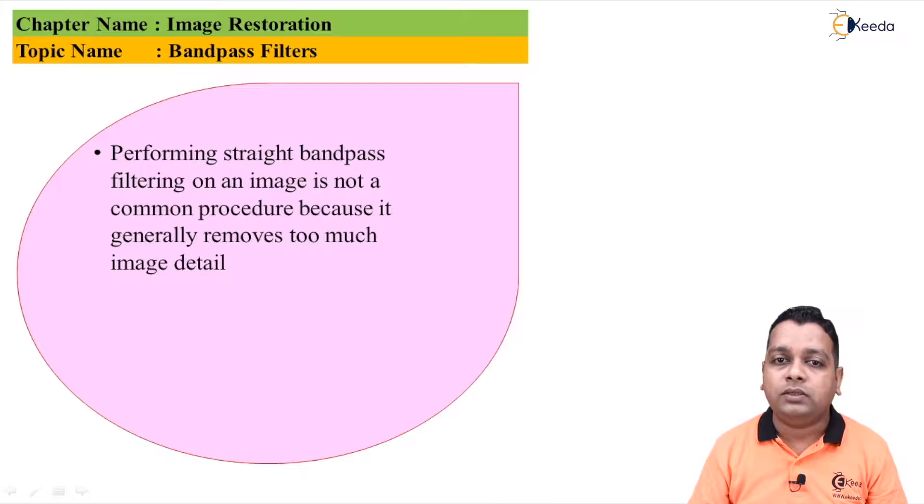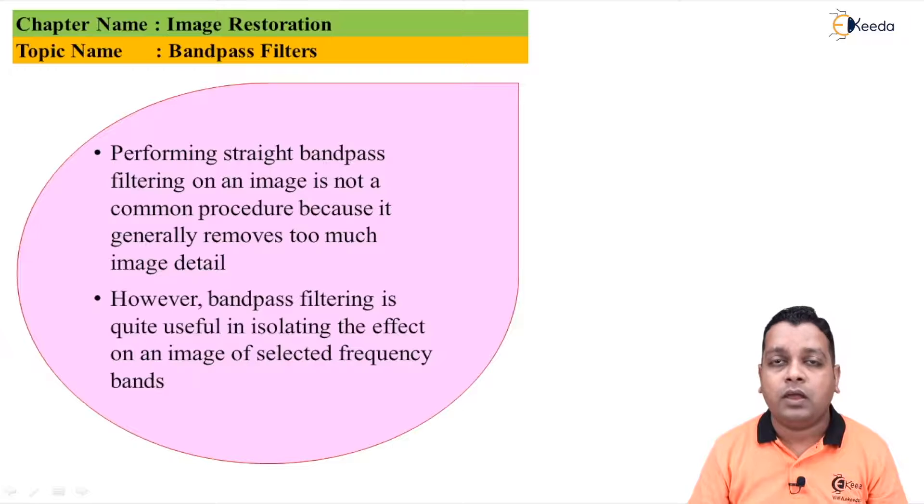Now while performing the straight band pass filtering there is a kind of drawback. So it is not a common procedure to opt directly the band pass filtering onto the image. Whereas the previous equation where we have utilized the band reject filtering and subtracting it from the one may be one of the options so that we have minimum losses while working with the band pass filtering.